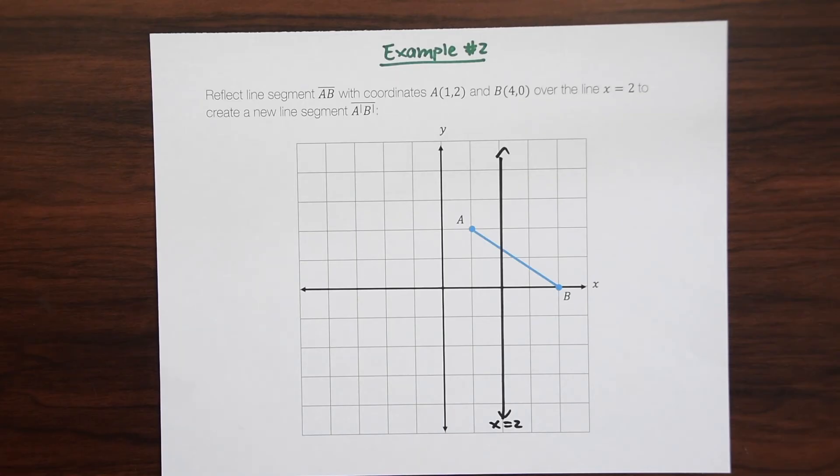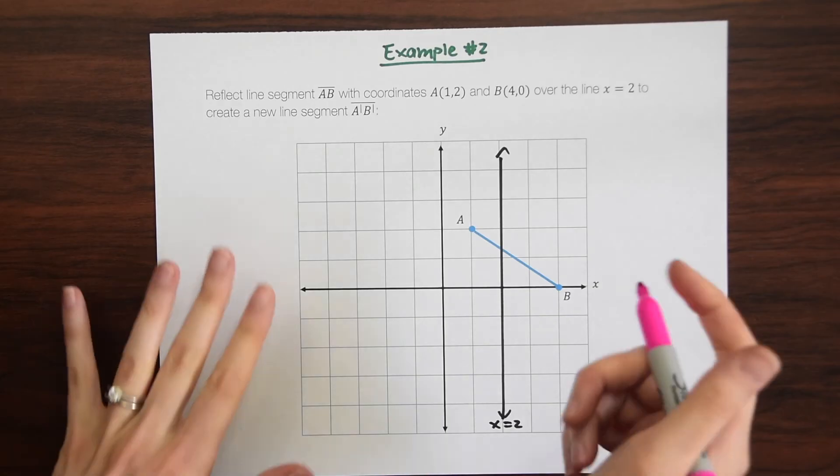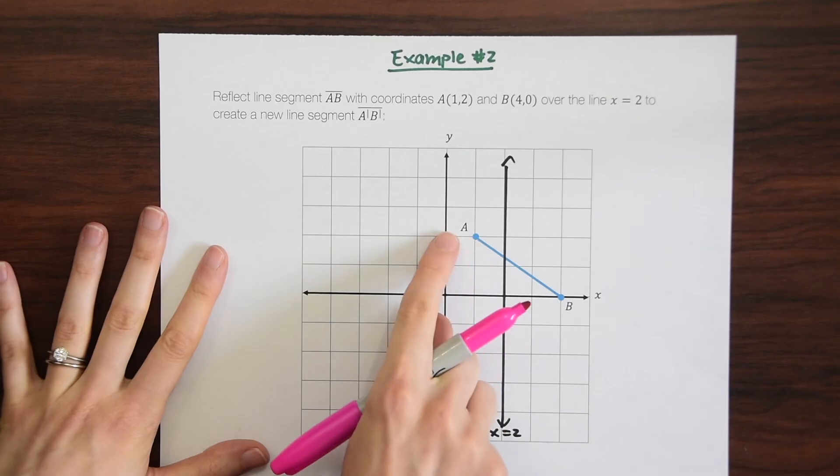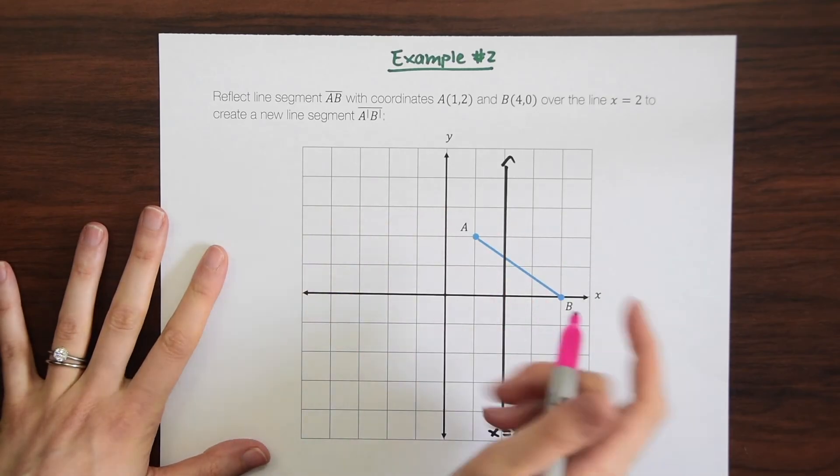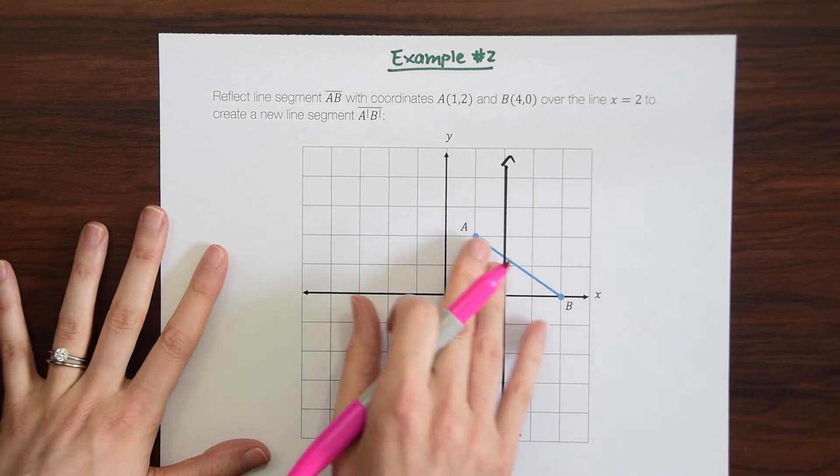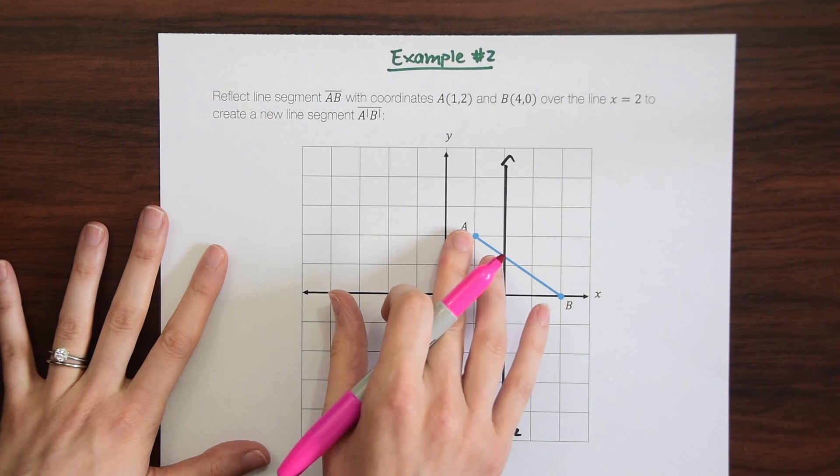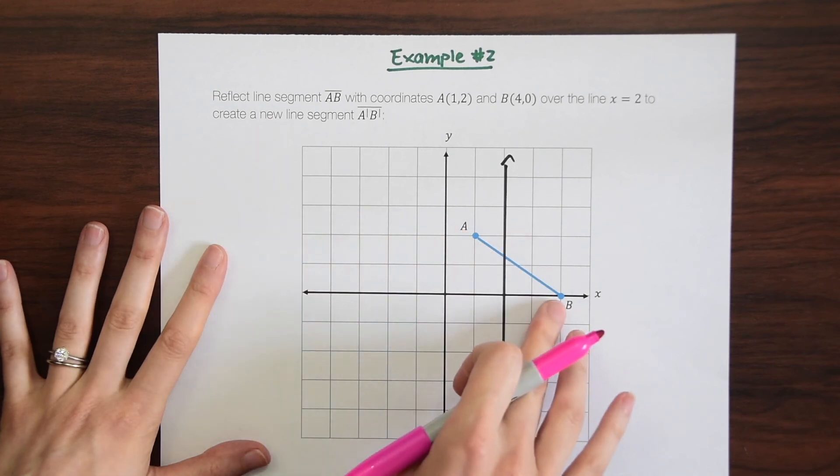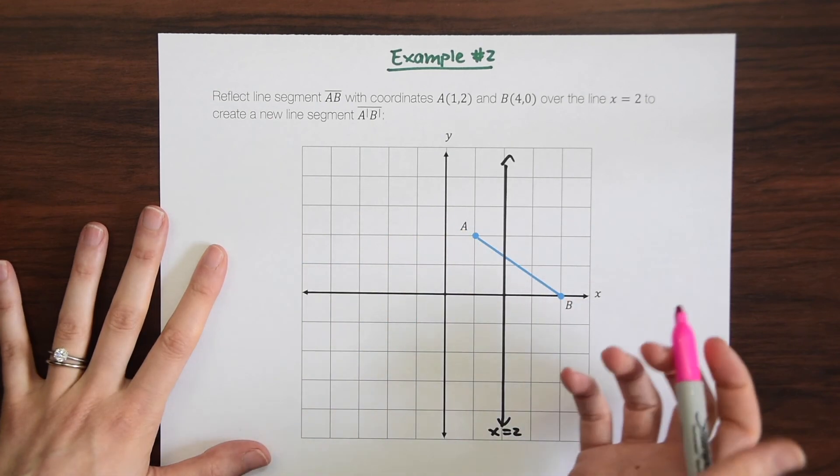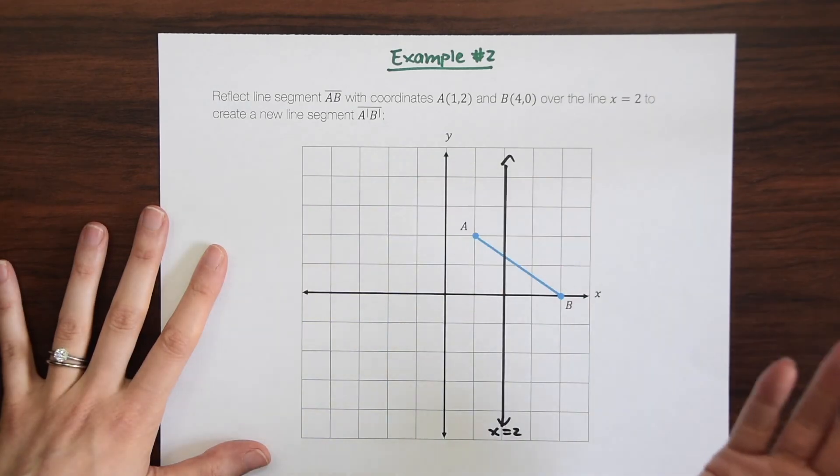And now we can take the mirror image of this point by point. So we only have two points, so this won't be so bad. But it's interesting because notice this is kind of being reflected onto itself, right? Because we have a point here on one side of our reflection line, and then we have another point B over here on the other side.